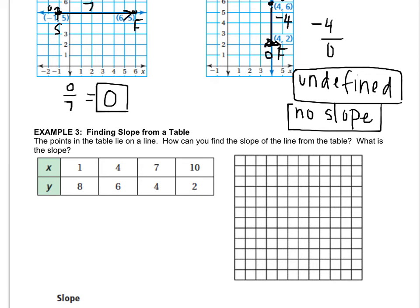There's something different in example 3. You have a table of points. And what they're asking us to figure out is how you can find the slope by using the table.